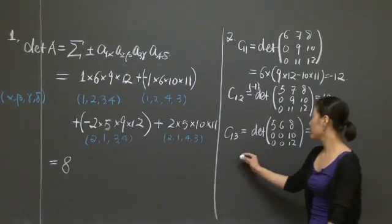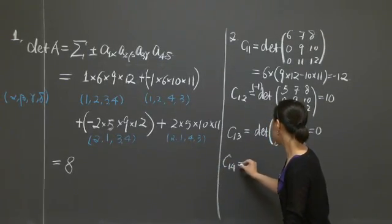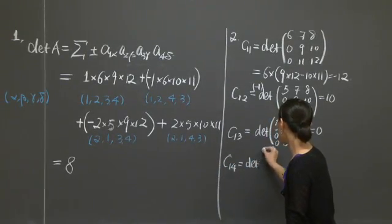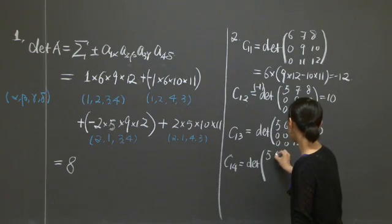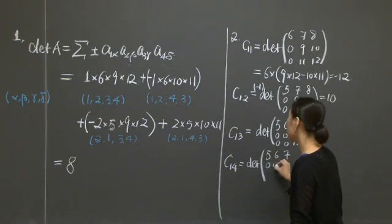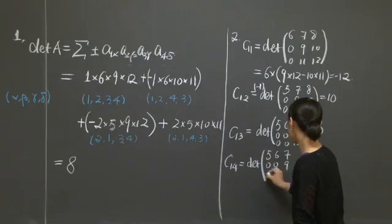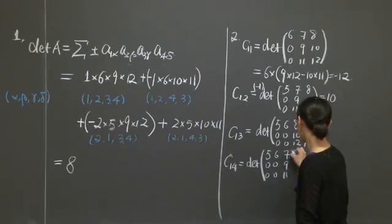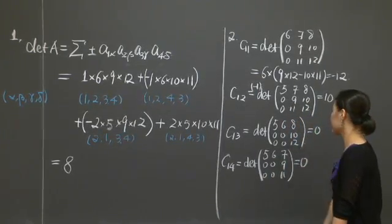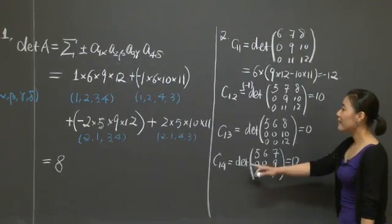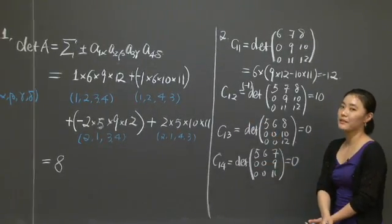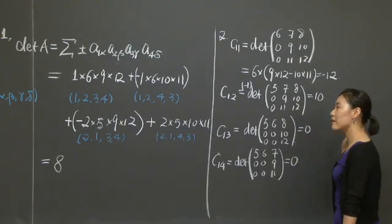So what is C14? C14 is the determinant of the matrix of 5, 6, 7, 0, 0, 9, 0, 0, 11. Same thing. It's singular, so its determinant is 0. All right. So that completes the second part.